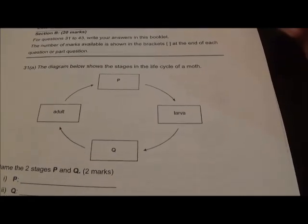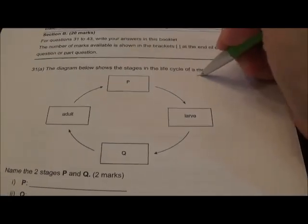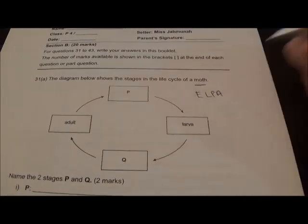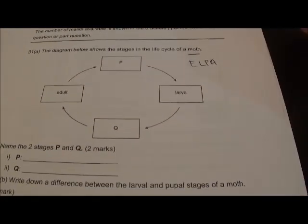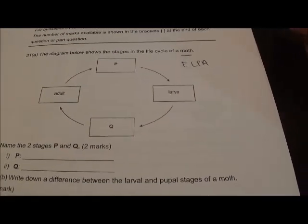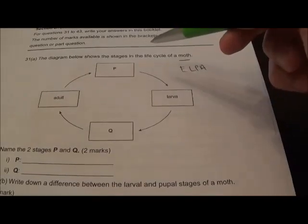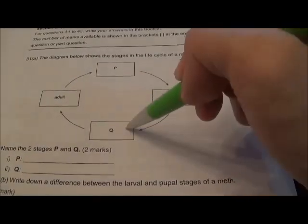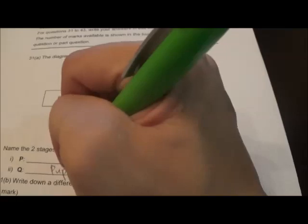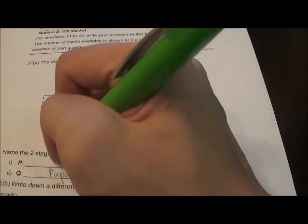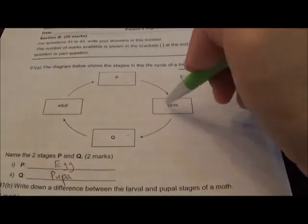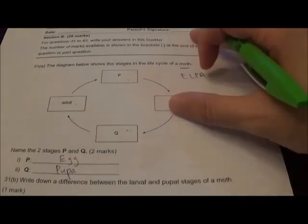Willington Booklet B. Question 31: The diagram shows the life cycle of a moth. A moth is a 4-stage cycle: Egg, Larva, Pupa, Adult. Fill in the 2 stages: after larva, Q must be pupa, and P here must be egg. So: egg, larva, pupa, adult.